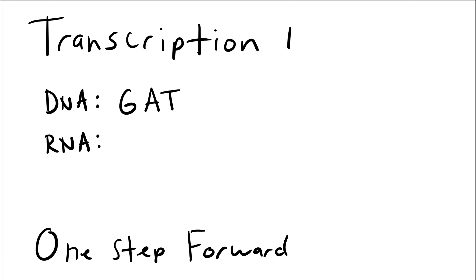Let's start with transcription. With transcription we're talking about going from DNA to RNA. The big idea here is that as you're transitioning from DNA, which has T's (thymine) in it, you're going to transition into RNA language through transcription, in which there are no T's — U's are substituted instead.